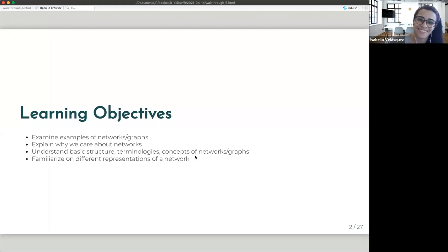So the learning objectives for this walkthrough is four things. First is we'll examine some examples of networks or graphs. And then second is why do we care about networks? The third point is to understand some key terminology, structures, concepts about graphs. And then the last thing would be to familiarize ourselves with different representations of a network. And then we'll have a demo afterwards.